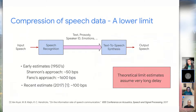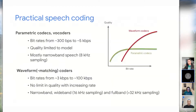The problem with these limits is that they need very long delay, sometimes infinite, to achieve. That means it's not very practical for two-way communication like voice over IP or conferencing. So looking at practical speech coding, there are basically two classes. The ones that go to really low bitrates are called parametric codecs, or sometimes called vocoders.